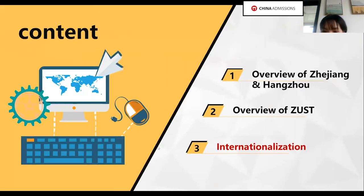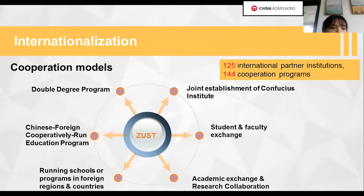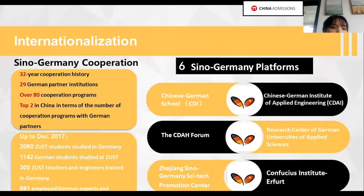Now I will introduce our international programs. We are running 144 cooperation programs with 125 international institutions in six directions. Among all our international programs, the Sino-German cooperation stands out with over 80 cooperation programs with 29 German partner institutions, and we rank top two in China in terms of the number of cooperation programs with German partners.